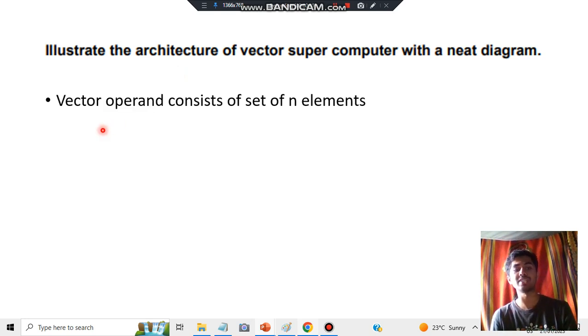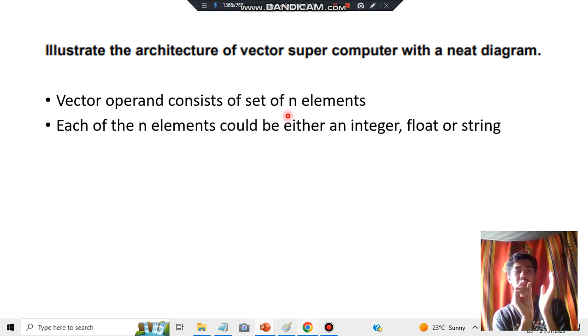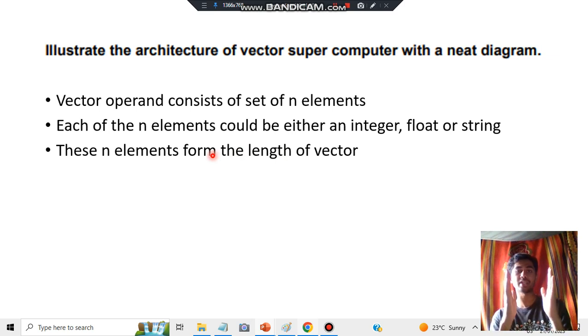What is vector? A vector consists of operands that are of n elements, meaning a vector is a quantity with n elements. That's the first point you will be writing. The second point is each of the n elements can be of the form of integer, float, or string. These are the different forms of elements present in the whole vector, and these n elements form the length of the vector. The vector length is determined by the n elements.